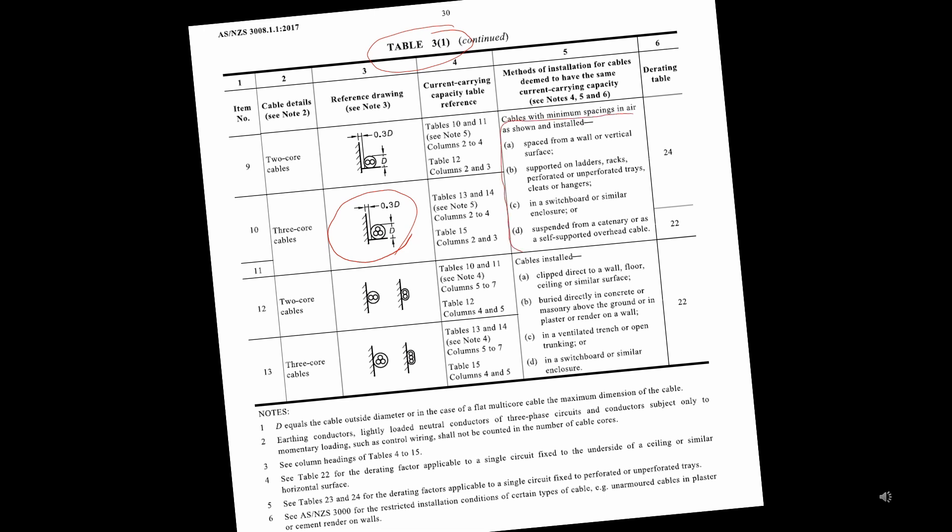Spaced from a wall with at least 30% of the cable diameter space between the wall and the cable. Supported on ladders, racks, perforated cable tray, cleats, hangers. Inside a switchboard or other enclosure. Suspended from a catenary or self-supporting cable. So, this is us. We are looking at a cable on a ladder.